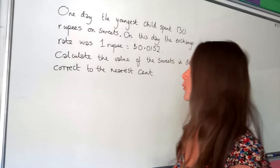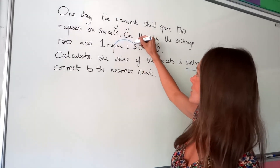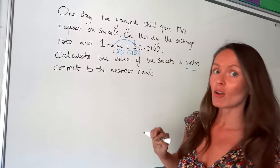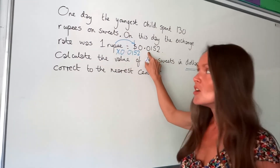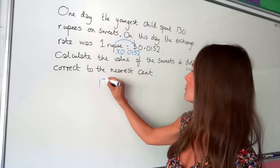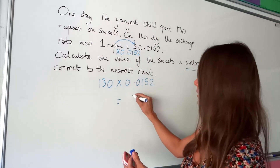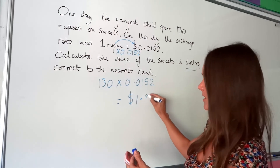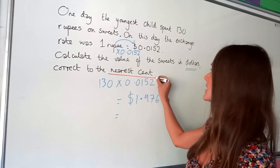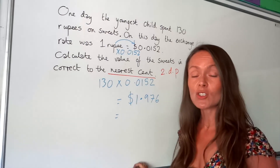In this final question we must change rupees into dollars. Using the exchange rate, to change rupees into dollars I multiply by 0.0152, because 1 multiplied by that number gives me that number. So I do the same with those 130 rupees that the child spends on sweets: multiply by 0.0152. When I put that in the calculator I get 1.976 — and remember this is now in dollars. But we're not finished, because this question asks us to round correct to the nearest cent.